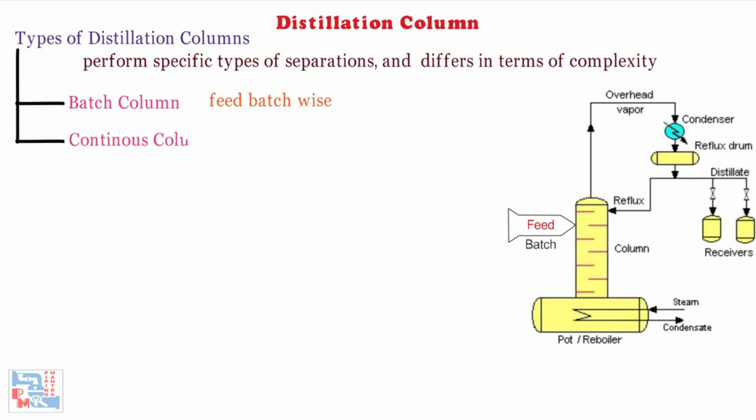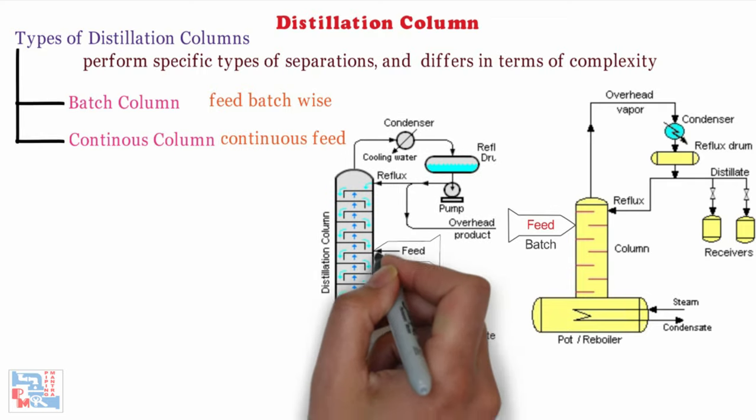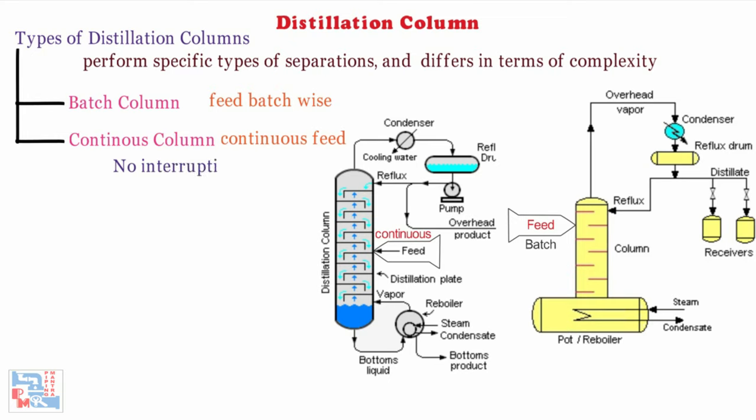Next comes continuous columns. In contrast, continuous columns process a continuous feed stream. No interruptions occur unless there is a problem with the column or surrounding process units. They are capable of handling high throughputs and are the most common of the two types. We shall concentrate only on this class of columns.